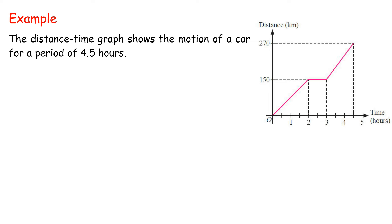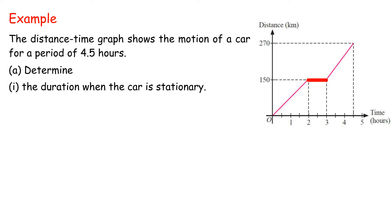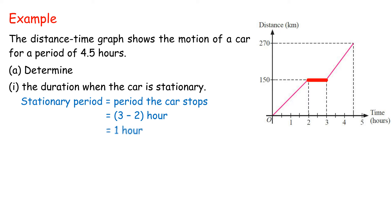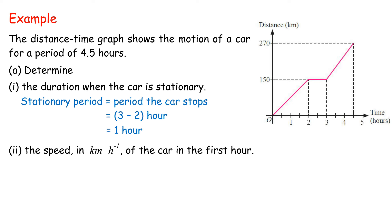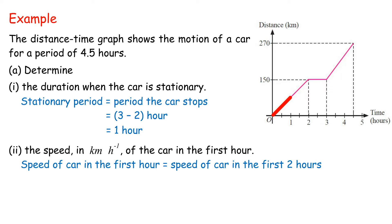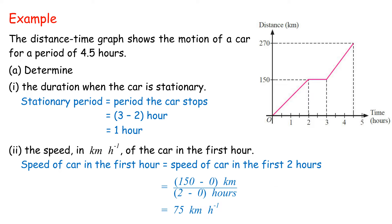Example: The Distance-Time Graph shows the motion of a car for a period of 4.5 hours. A. Determine: 1. The duration when the car is stationary — stationary period equals 3 minus 2 hours, equals 1 hour. 2. The speed in km per hour of the car in the first hour — speed equals 150 minus 0 km divided by 2 minus 0 hours, equals 75 km per hour. The distance traveled in the first hour is not known, so speed is determined by the distance traveled in the first 2 hours, as the gradients on a straight line are the same.